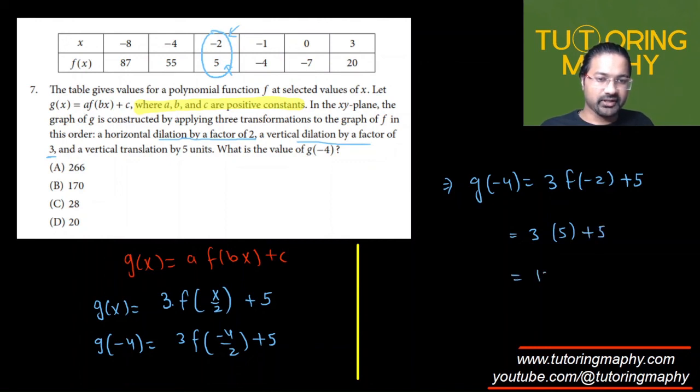Five times three is 15. And 15 plus five is 20, which is option D. That's our final answer.